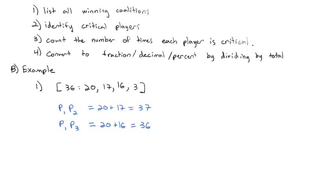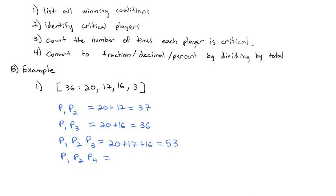Looking at three-player coalitions: Player 1, Player 2, and Player 3 gives 20 plus 17 plus 16, which is 53 votes — way more than quota. If Player 3 is missing and we have Player 1, Player 2, and Player 4, that's 20 plus 17 plus 3, which is 40 votes — enough to meet quota.